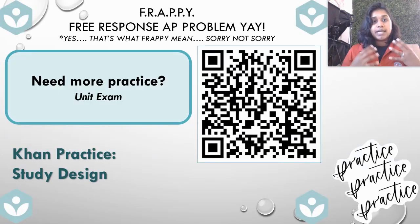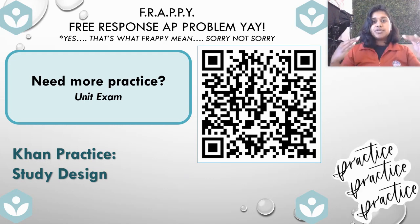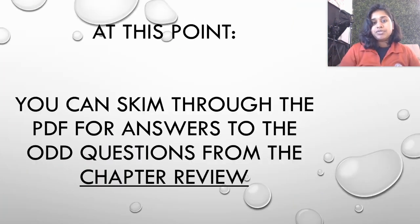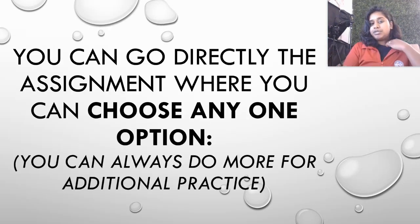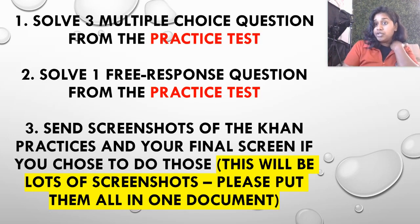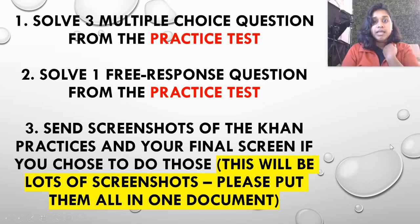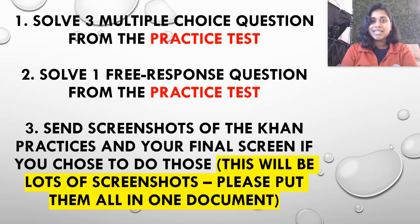Here is that unit exam on study design. I really suggest you all start working through those cons — they're great practice to reset and refocus on each topic as we work towards those mega FRQs for the 45-minute online take-home exam. You can skim through the PDF for answers to odd questions from the chapter review, or go to your assignment and choose one of three options: solve one FRQ from the practice test, solve three multiple-choice questions with work shown — no work means no credit — or send me screenshots of your cons. You don't have to be super successful in the cons; just show me you're working through it. See you in the next video!